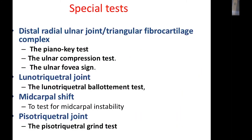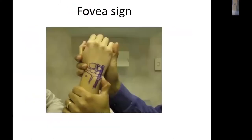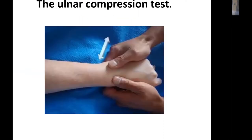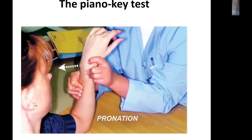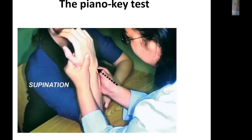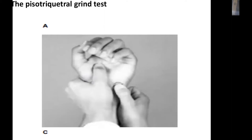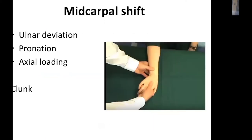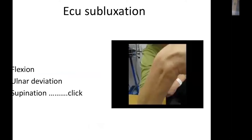According to the suspected pathology, perform special maneuvers to confirm the diagnosis. For the TFCC, use the fovea test and the ulnar compression test — axial load with ulnar compression produces clicks and pain. The piano key test assesses instability between the radius and ulna, always comparing to the contralateral side; instability indicates a deep TFCC tear. The lunotriquetral ballottement test, pisotriquetral grind test, mid-carpal shift test with ulnar deviation and pronation axial loading produces a clunk. ECU subluxation is provoked by flexion, ulnar deviation, and supination, causing the ECU to sublux with an audible clunk.